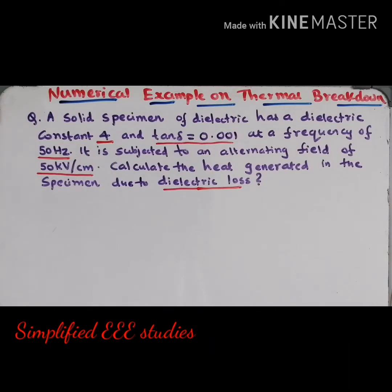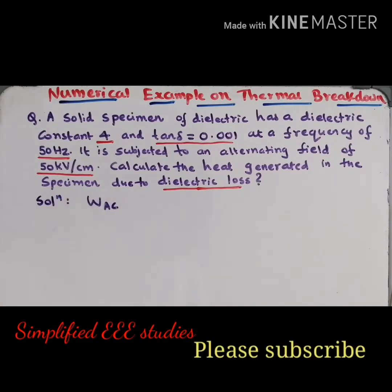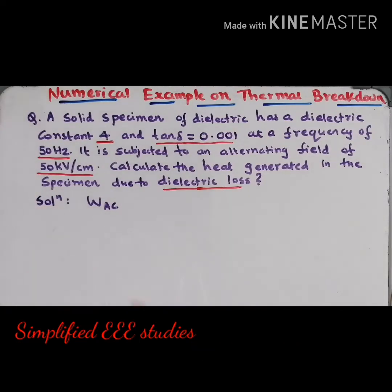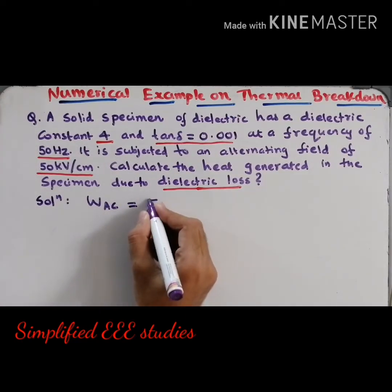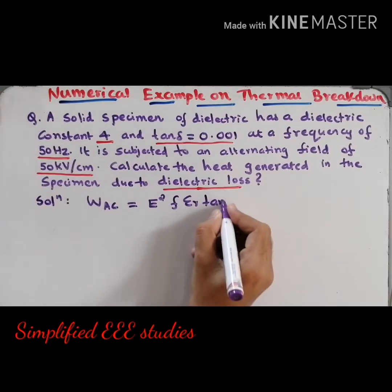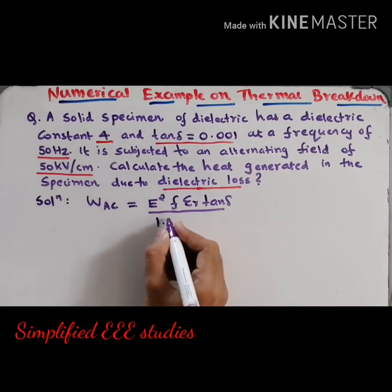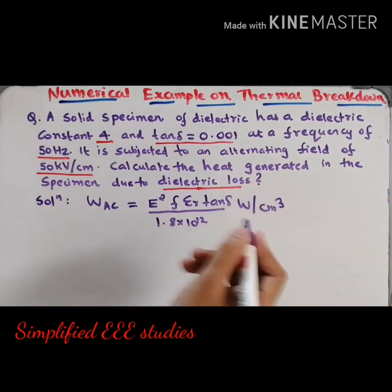This numerical example is related to WAC — that means heat generated whenever you are applying an AC field. We can write the equation of heat generated due to AC field. That is given by WAC = E² × F × εr × tan(δ) / (1.8 × 10¹²) watts per centimeter cube.